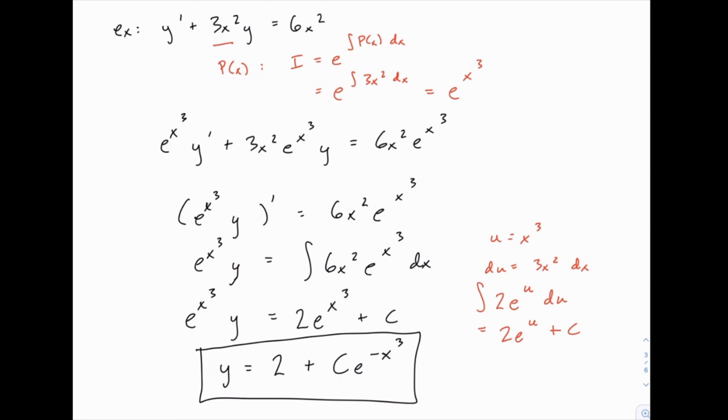A common mistake to make is to forget to add the plus c when you integrate. Then if you divided both sides by e to the x cubed, you'd just get y equals 2, and some people would add a plus c at that point, but that's too late. Make sure the plus c originates at the integration step. Otherwise, this one's fairly straightforward. You need to do a quick u substitution when you integrate, but other than that, the process is very similar to the previous example.